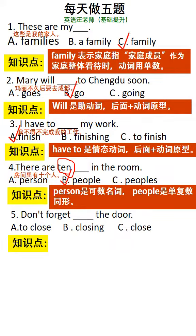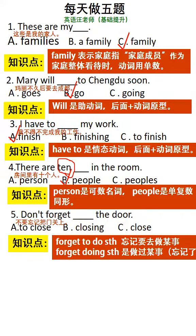第五题：Don't forget to close the door. 不要忘记把门关上，说明这件事情还没有做。forget to do something表示忘记做某事（还没做）；而forget doing something表示做过某事现在忘记了。因此选择A选项。双击关注，谢谢大家。